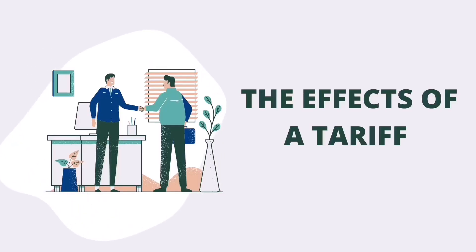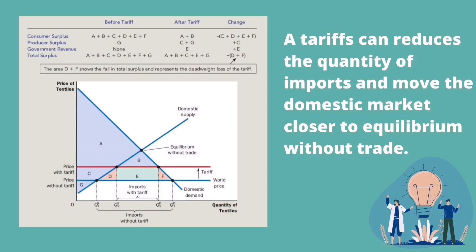The effects of a tariff: a tariff can reduce the quantity of imports and move the domestic market closer to the equilibrium without trade. Because tariffs raise domestic prices, domestic sellers are better off, domestic buyers are worse off, and the government increases revenue. Measuring these gains and losses through changes in consumer surplus, producer surplus, and government income, we find that total surplus in the market decreases by area F. This fall in total surplus is called the deadweight loss of the tariff.